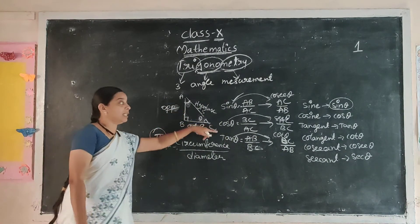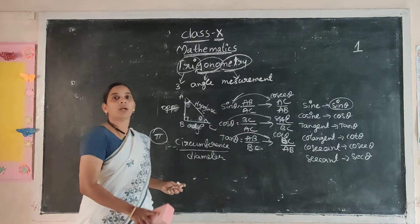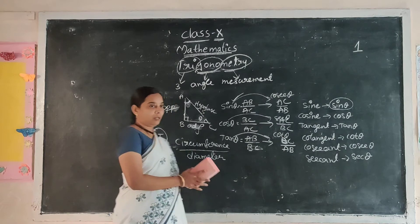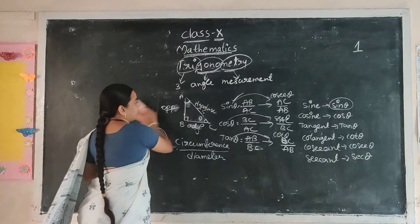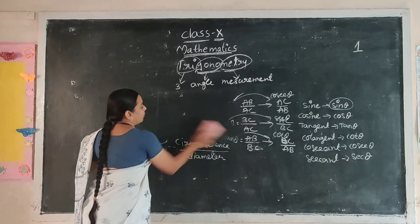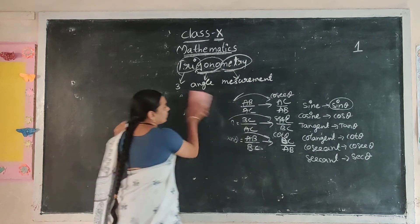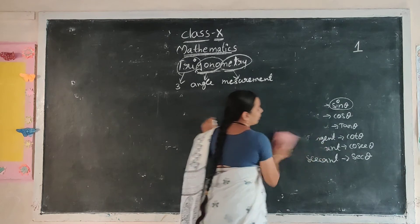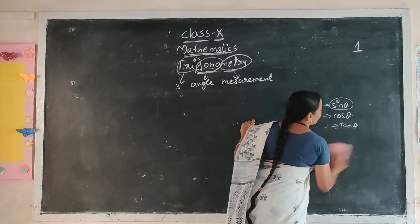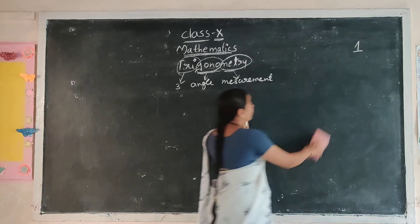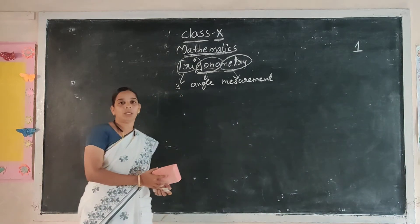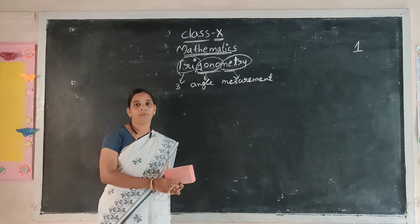Using these six ratios we have to solve the trigonometry chapter. Before introducing the formulas, let's look at what is the use of this chapter in your daily life. For example, everyone knows the Eiffel Tower — so much height is there. Is it possible to measure? Using applications of trigonometry, it is very easy.